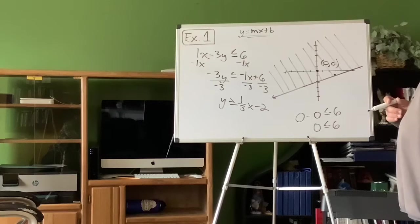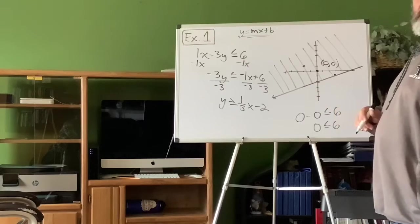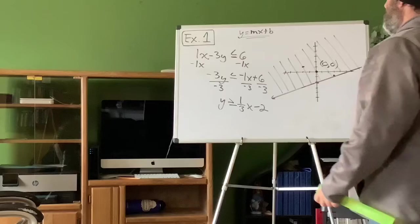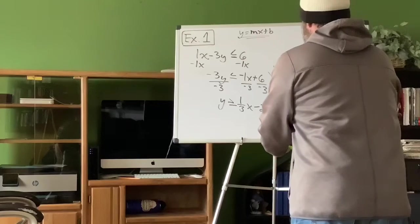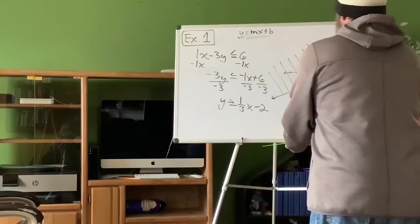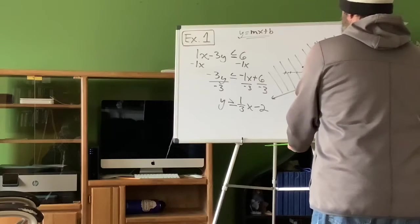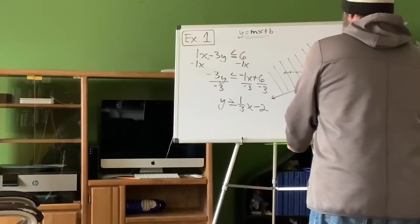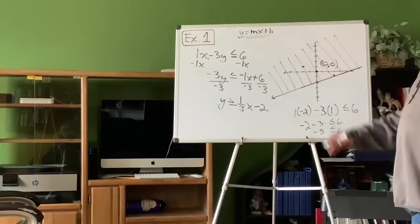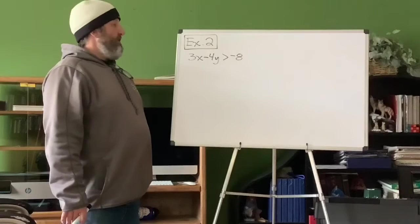I'm going to choose the point negative 2, 1 — that should be true, but let's check it. 1 times negative 2 minus 3 times 1 should be less than or equal to 6. Negative 2 minus 3 gives negative 5 — is negative 5 less than or equal to 6? Sure enough, that's true. Any point in the shaded region is true.